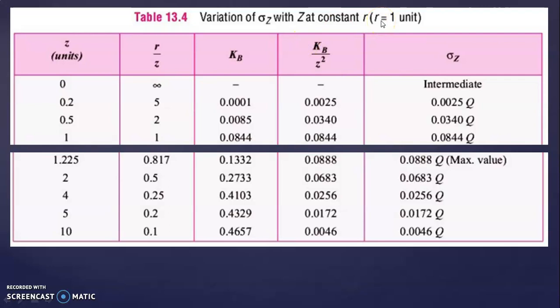Let R equal 1. If Z equals 0, you assume Z value and keep changing Z while R stays constant. The ratio R divided by Z becomes 1 divided by Z. For Z equal to 0, that is 1 divided by 0, which is infinity. So there is no value for KB — this case is indeterminate. We cannot find any vertical stress value for this case.